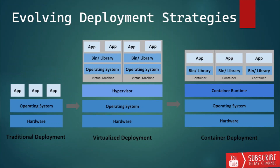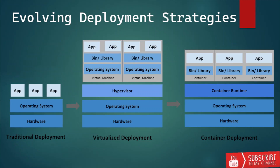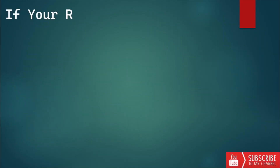Virtualization allows better utilization of resources in a physical server and allows better scalability because an application can be added or updated easily. Each virtual machine is a full machine running all the components including its own operating system. Containers are similar to virtual machines but they have relaxed isolation properties to share the operating system among applications. Therefore containers are considered lightweight. Similar to a VM, a container has its own file system, share of CPU, memory, process space, and more. As they are decoupled from the underlying infrastructure, they are portable across clouds and operating system distributions. So why do we really need virtual machines or containers?